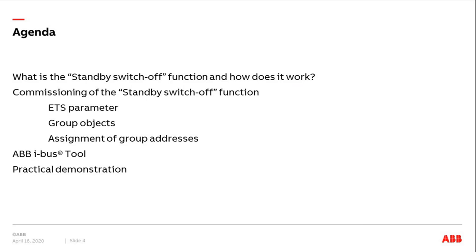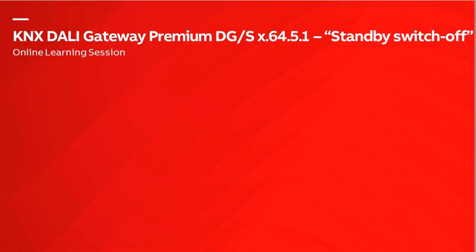Let's have a look at the agenda first. We will start with the standby switch-off function — what it is and how it works, which components we need, and then we come to commissioning: how to set the ETS parameters. We'll look at group objects and how we assign group addresses between the DALI Gateway and a switch actuator. We'll also look at the ABB IBUS tool, and at the end there will be a practical demonstration.